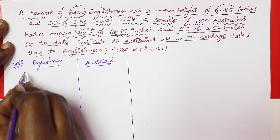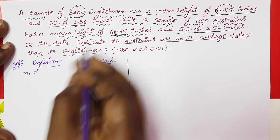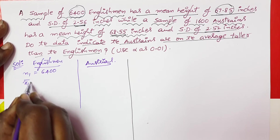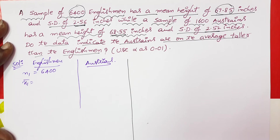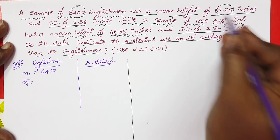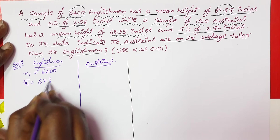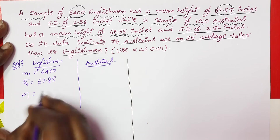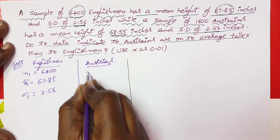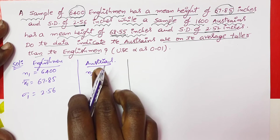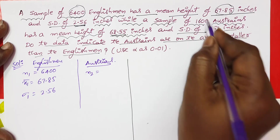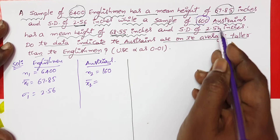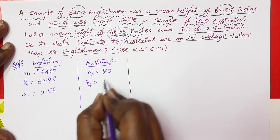From the given data: sample size n1 = 6400, mean height x̄1 = 67.85, standard deviation σ1 = 2.56. For Austrians, n2 = 1600 and x̄2 = 68.55.